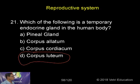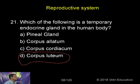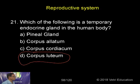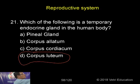Once pregnancy is not there, the corpus luteum is normally degenerated and represented as a scar tissue called corpus albicans. This scar tissue of the non-functional corpus luteum is called corpus albicans.